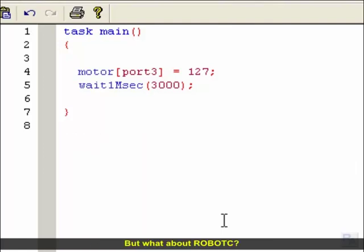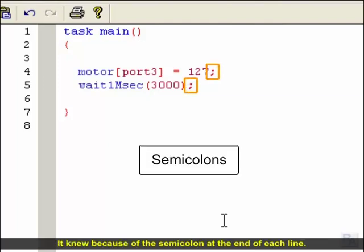But what about Robot C? How did it know where one statement ended and the other began? It knew because of the semicolon at the end of each line. Every statement ends with a semicolon. It's like the period at the end of a sentence. End of statement one, end of statement two.